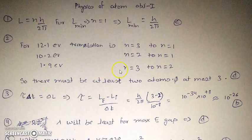And for 1.9 eV it should be from n equal to 3 to n equal to 2. As we know that an electron cannot directly jump from n equal to 1 to 3 and then again come back to 2.